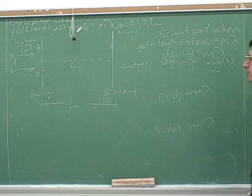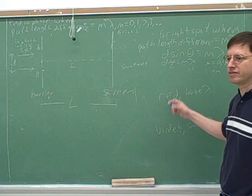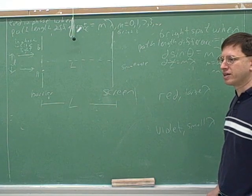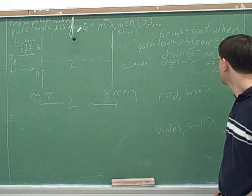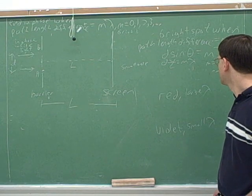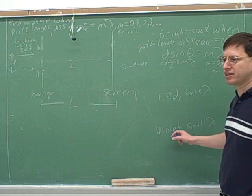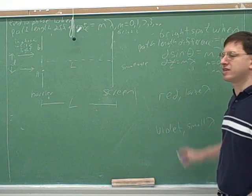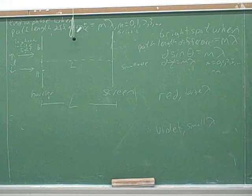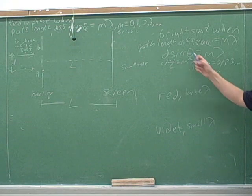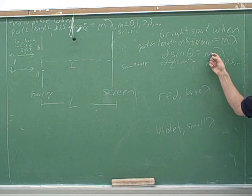So let's think about the first bright red spot above the center line. The first bright red spot above the center line. And the first bright violet spot above the center line. Will they be in the same place? Will the first red spot above the center line be in the same place as the violet spot? How can we tell that? Let's think about a formula here. We can go back to this. Remember the bright spot happens when D sine theta equals M lambda.